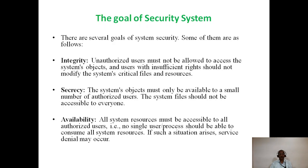Another goal is secrecy — the system's objects must only be available to a small number of authorized users, and system files should not be accessible to everyone. Availability is another main goal: all system resources must be accessible to all authorized users but not to unauthorized users. No single user or process should be able to consume all system resources, as that leads to a denial of service situation.